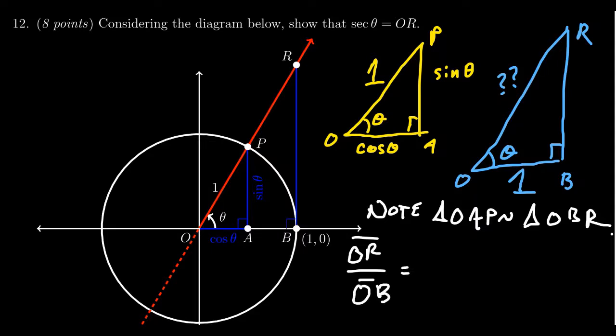We set this equal to corresponding positions. OR is the hypotenuse, so OR over OB compares to OP over OA. We know OP is one and OA is cosine theta.